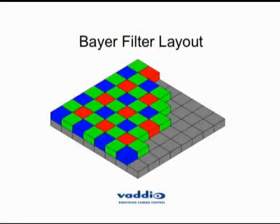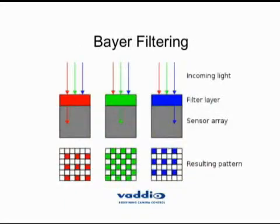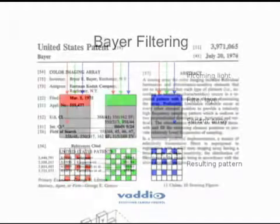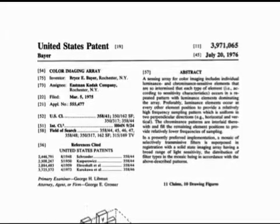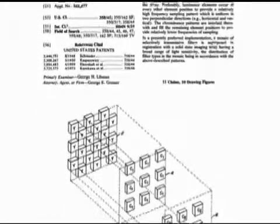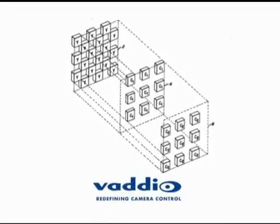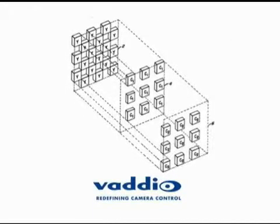Let's talk about the Bayer filter. What we see here is a different layout of filters — each pixel now has a little filter attached on top of it, with greens, reds, and blues, so that when light goes through these pixels, the filtering results in the pattern indicated in this chart. There is a patent number on this slide, but basically it's two times green, one time red, one time blue, and then it's processed accordingly.